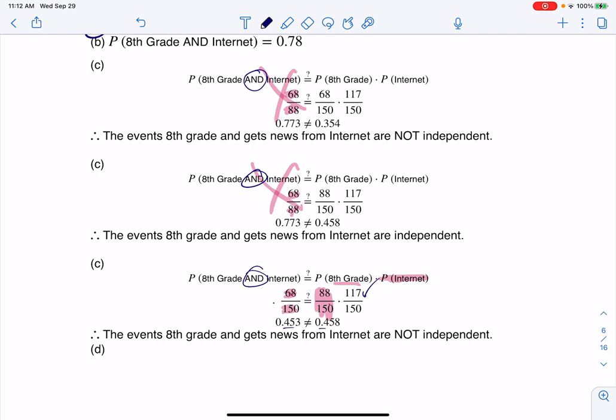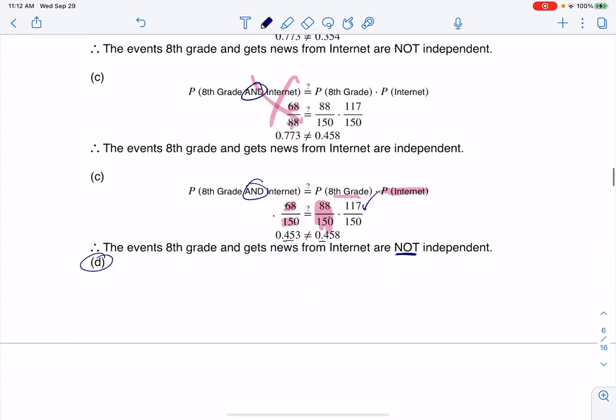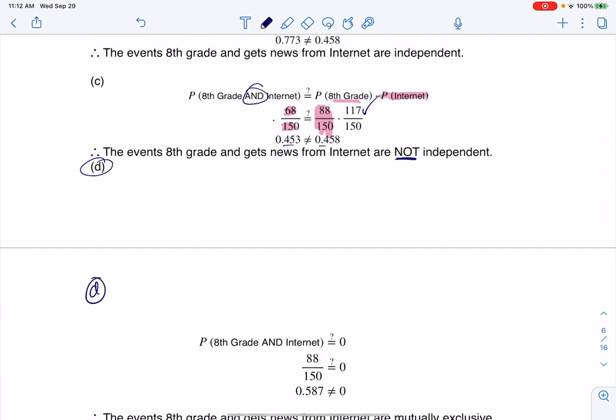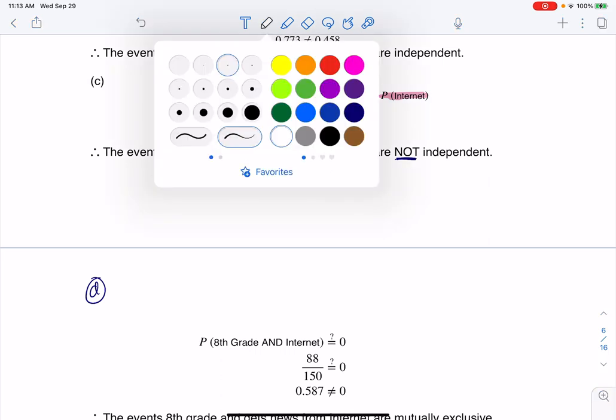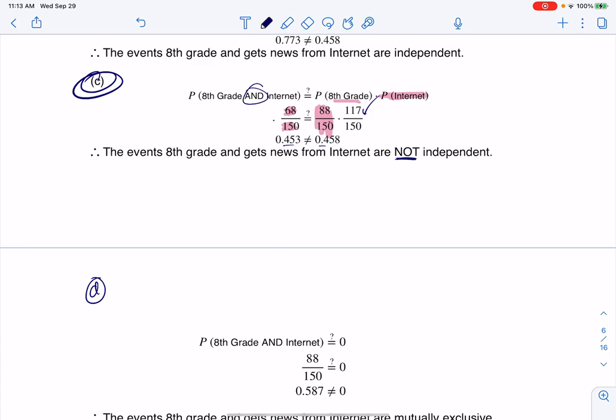So these numbers are correct - when I crunch them on my calculator I do get those decimals. It's close, right? You got 0.453 to 0.458, but they're not the same, so I'm going to go ahead and say they are not independent. I'm seeing this D here that should probably be down here - I'll fix that in post. Let me circle the correct answer, it's this one.